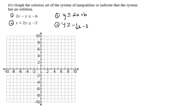Now that both inequalities are in slope-intercept form, let's graph the first one: y ≥ 2x + 6. It starts at y-intercept positive 6, and the slope is 2, meaning rise 2 over 1 — a positive slope going up to the right. Going left, we go down 2 over 1. Once all points are plotted, we draw a solid line, since the inequality is greater than or equal to.